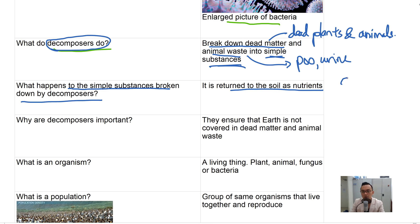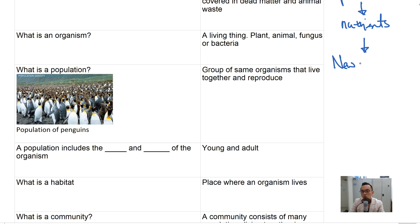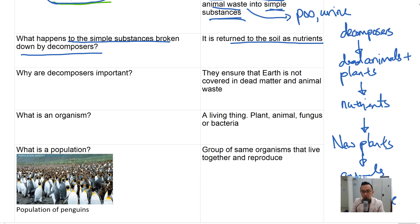Decomposers eat all the dead animals and plants and break them down into nutrients for new plants, which will then be eaten by animals and decomposed again. So this is basically a cycle. Without decomposers, there would be lots of dead animals and plants lying in the forest that would not be returned. Decomposers are important because they ensure the earth is not covered in dead matter and animal waste.